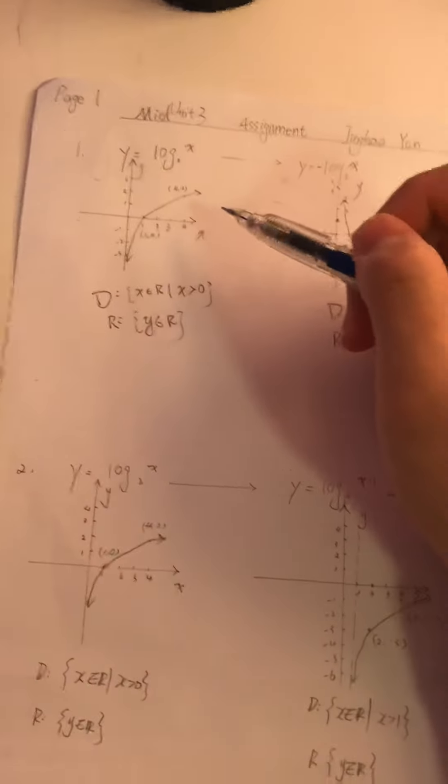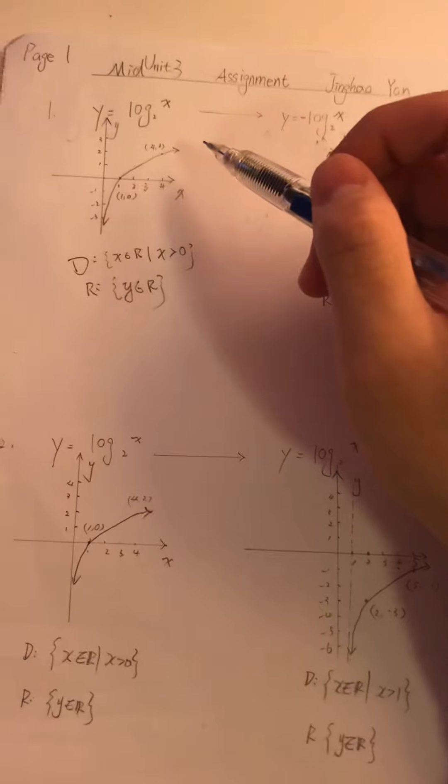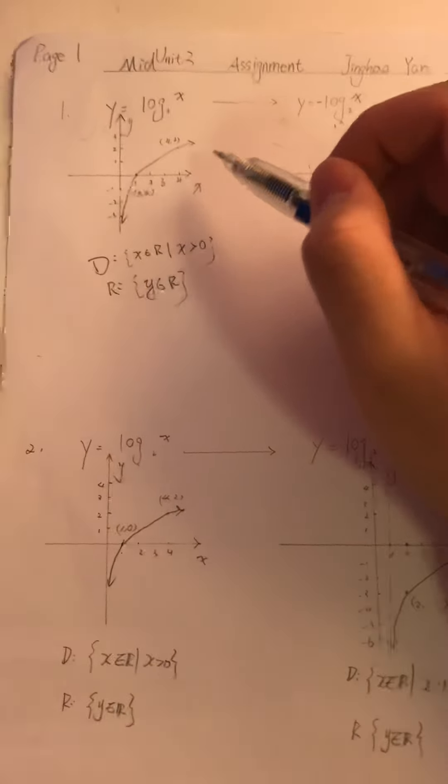Question 1 asks for describing what happens to the domain and range of a logarithmic function under a vertical reflection. So here is my resolution.